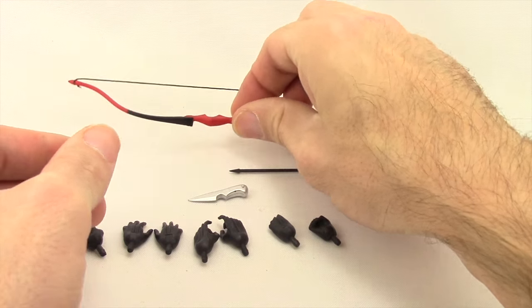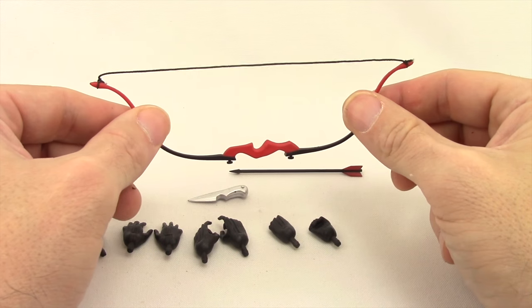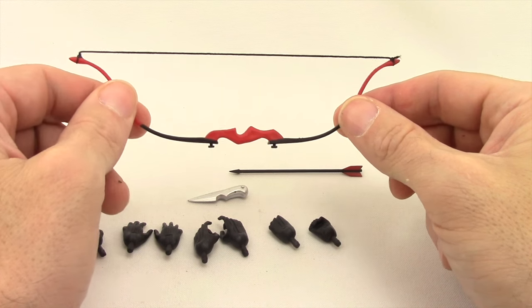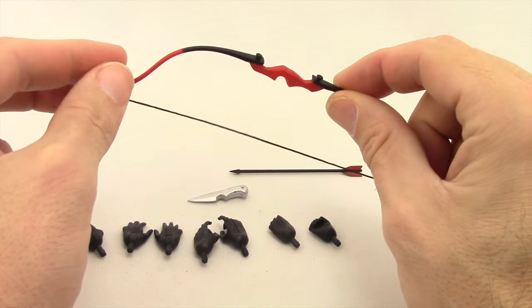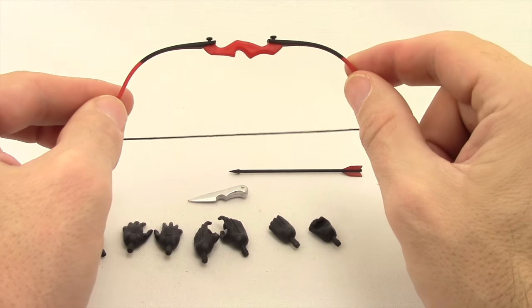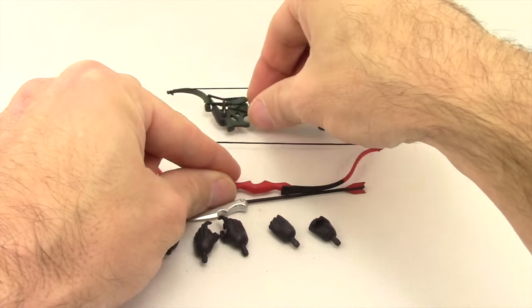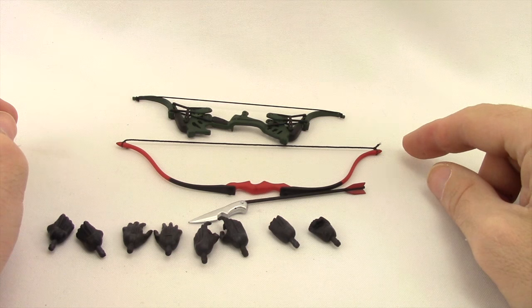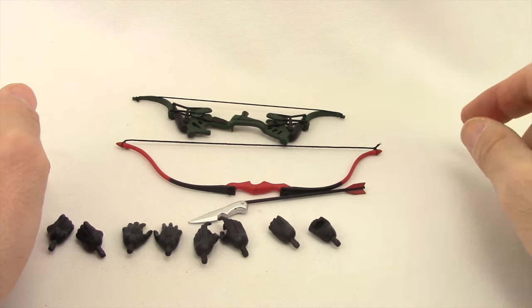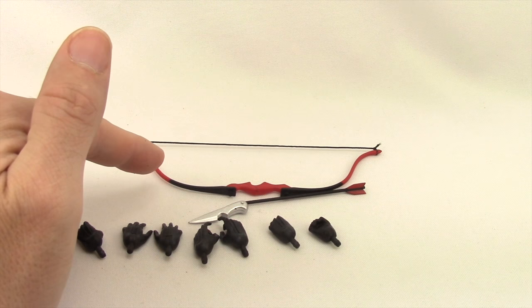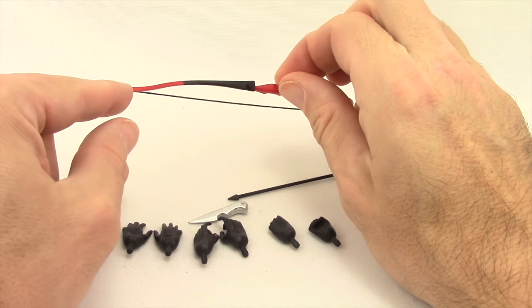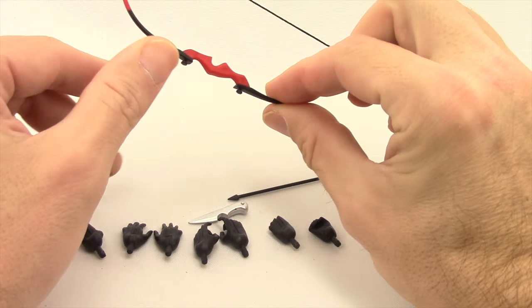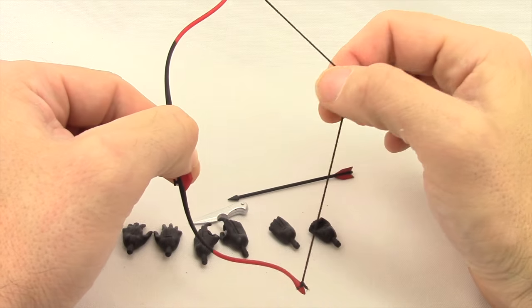Now the figure also comes with a bow. I got to say this bow I think is a little bit on the large size, they kind of overdid it with the sizing on this bow. It would have been better if it had been a little bit smaller. Here it is compared to Arrow's compound bow, and you can see how much bigger it is. But I do like the coloring, you've got the red and the black and that elastic type string.